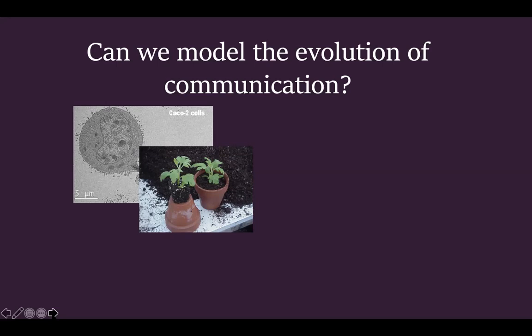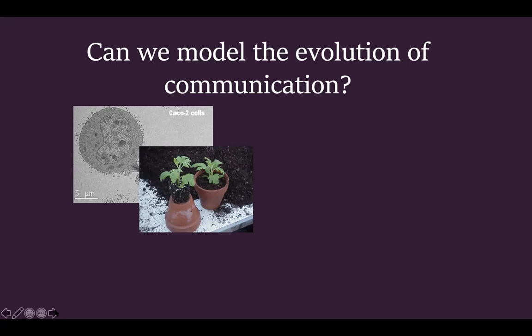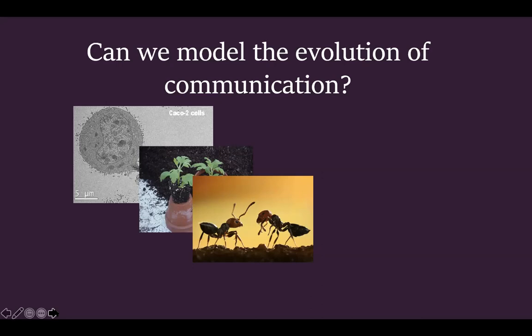Plants also communicate through chemical signaling. What you smell when grass is being mowed — that pleasant fresh smell — is actually a communication signal the grass emits when something is disturbing it. Both cells and plants communicate through chemicals and electric signals. They don't have a vocabulary like we do, but they still exchange information and adapt based on it.